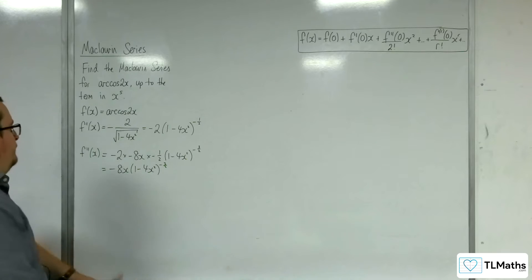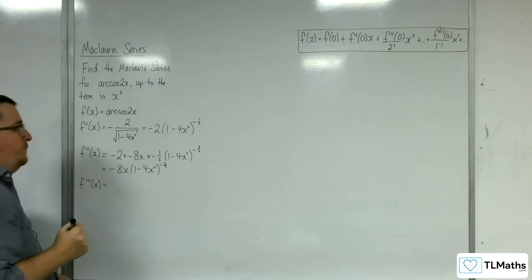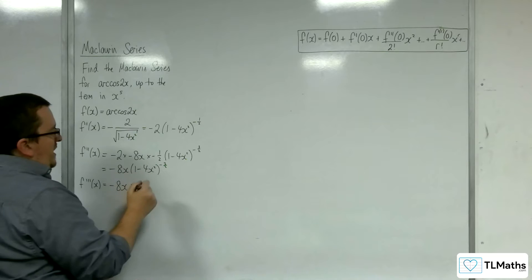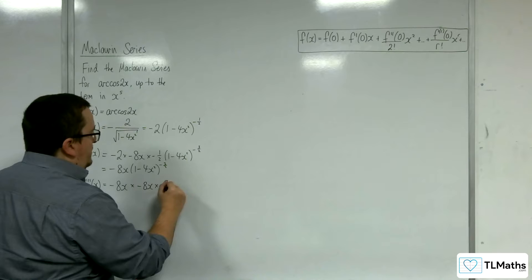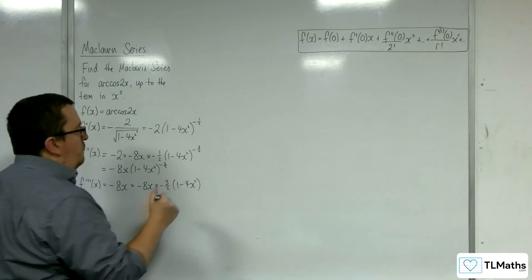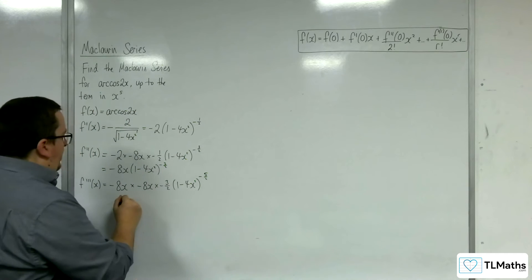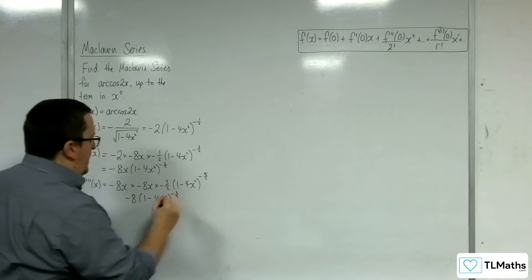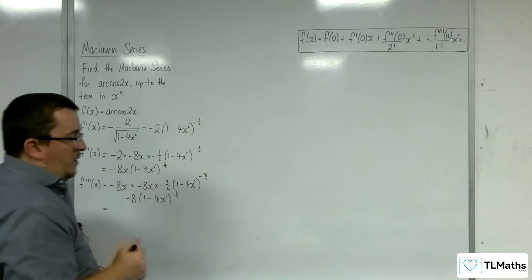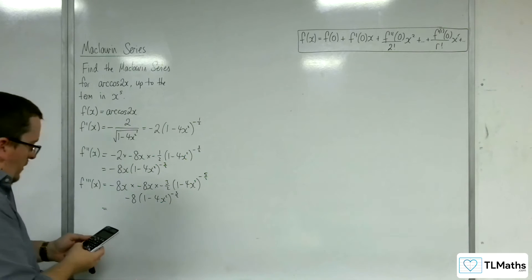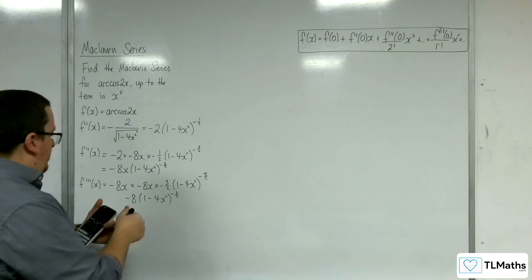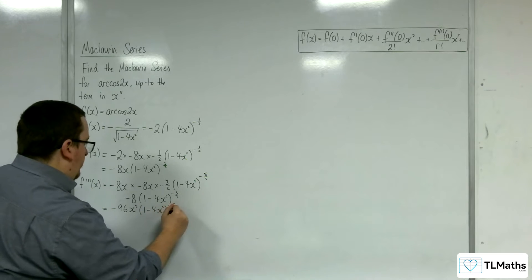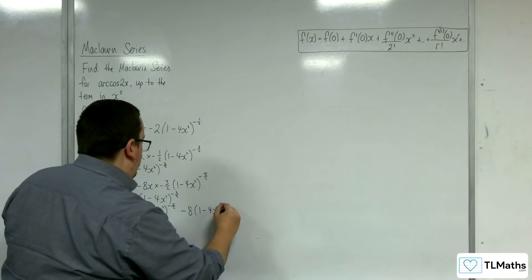Now I need to differentiate again, bringing in the product rule. We've got the first, minus 8x, times the derivative of the second: minus 8x comes outside, minus three halves comes down to the front, giving (1 minus 4x squared) to the minus five halves. Plus the second times the derivative of the first: minus 8 times (1 minus 4x squared) to the minus three halves. Simplifying: minus 96x squared times (1 minus 4x squared) to the minus five halves, minus 8 times (1 minus 4x squared) to the minus three halves.